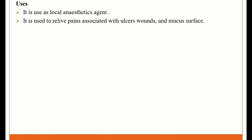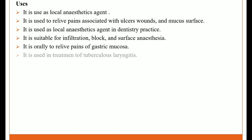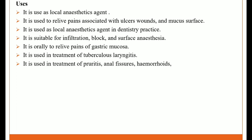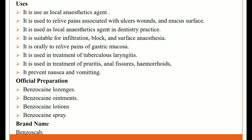Uses of benzocaine: it is used as a local anesthetic agent to relieve pain associated with ulcer wounds and mucous surfaces. It is used as a local anesthetic in dentistry practice and is suitable for infiltration, block, and surface anesthesia. It is taken orally to relieve pain of gastric mucosa. It is used in treatment of tuberculosis laryngitis, pruritus, anal fissures, and hemorrhoids. It prevents nausea and vomiting. Official preparations: benzocaine lozenges, benzocaine ointment, benzocaine lotion, benzocaine spray. Brand name: Benzoscab.